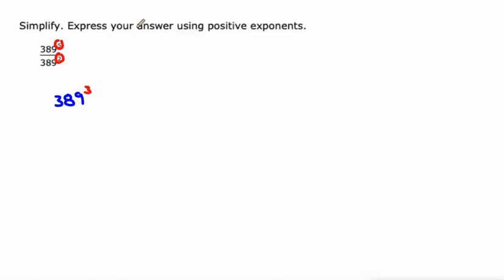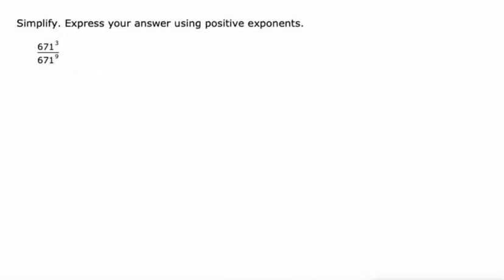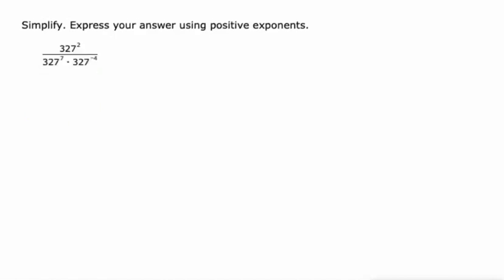One more basic review here: what happens when we're dividing numbers at the same base—671—but the number on bottom is bigger than the number on top? We could look at this as 3 minus 9 is negative 6, but instead what I'm gonna do is think about it as 1 over 671 to the positive 6. That's what a negative exponent is anyway—it represents repeated division instead of repeated multiplication.